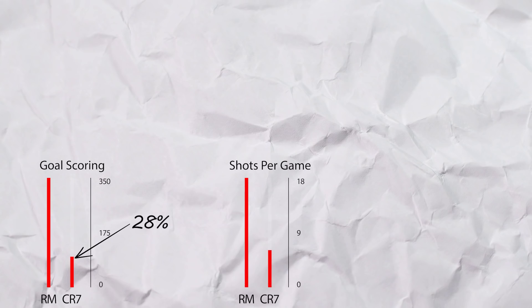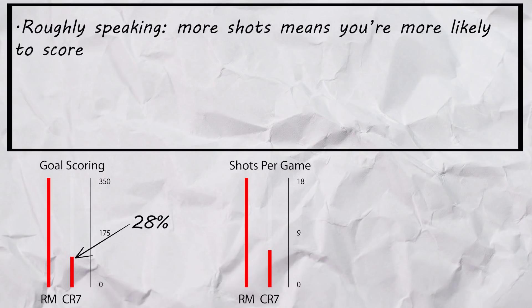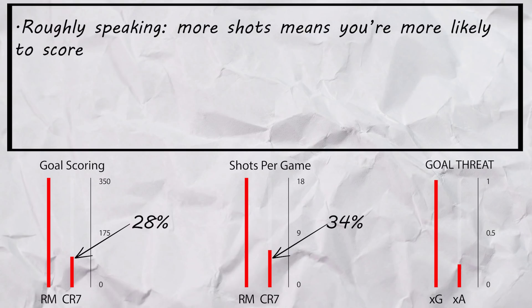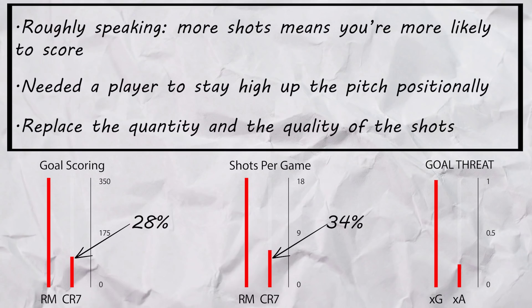Statistically, in the last three seasons, Madrid scored 310 goals. Of these, Ronaldo scored 28%, or 86 goals. He also took most of the team's shots in each season — all things being equal, the more shots a team takes, the more likely they are to score — and Ronaldo was taking 34% of their shots. Pair this with expected goals or assists of over 1 per game during that time, and you see positionally they needed a player who would be high up the pitch, spearheading things, as well as taking statistically dangerous shots.